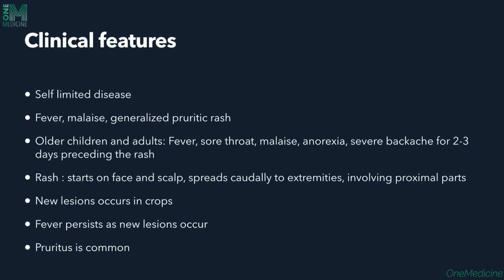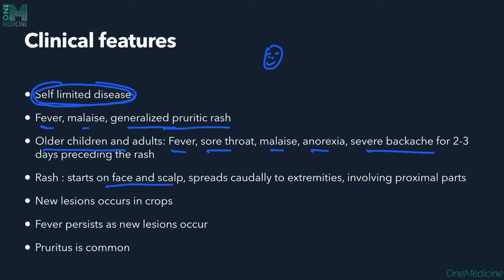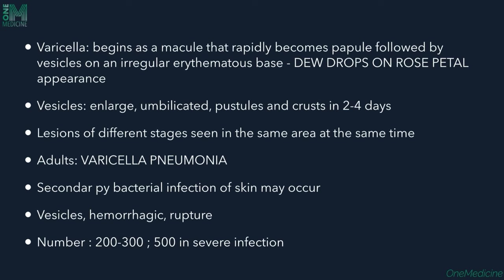Clinical features: Varicella is a self-limited disease. Symptoms include fever, malaise, and generalized pruritic rash. Older children may also have sore throat, anorexia, and severe backache. The rash starts on the face and scalp, then spreads caudally to involve the extremities including proximal parts. New lesions occur in crops and fever persists as new lesions appear. Pruritus is also present. The rash begins as a macule, rapidly becoming a papule, then a vesicle on an erythematous base — characteristically described as 'dewdrops on a rose petal' appearance.